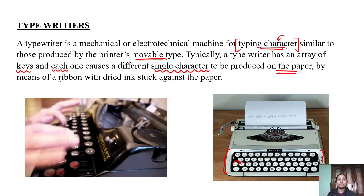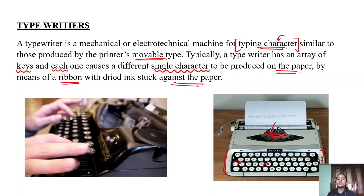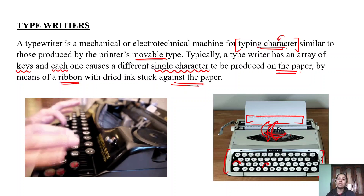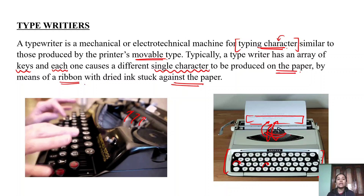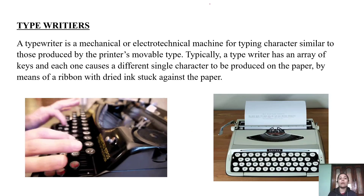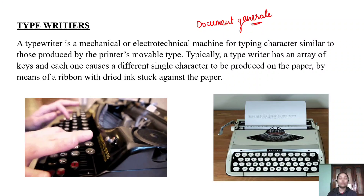This is done by means of a ribbon with dried ink stuck against the paper. These ribbons strike the page when you press a key, transferring the dried ink to the page as the impression of the character. The ribbon strikes and the dried ink is transferred to your page, and you successfully generate a document from the machine.